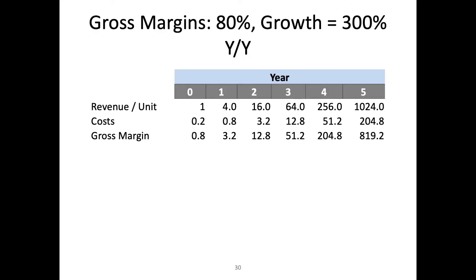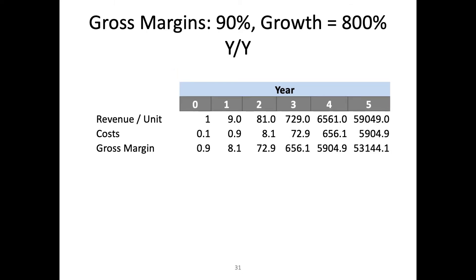This is why venture capitalists love software, because as we increase these margins, our growth rates become even more absurd. With software, the cost of doing a Google search — the gross costs are just the energy of that server. It's basically nothing. And this is why VCs hate hardware — hardware requires capital. Your gross margins are lower and you need to worry about distribution and all these other things.